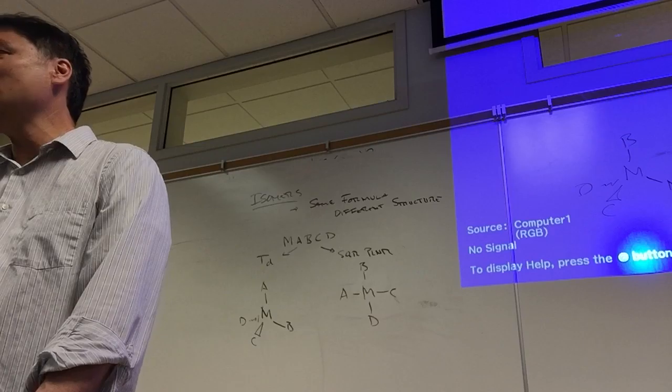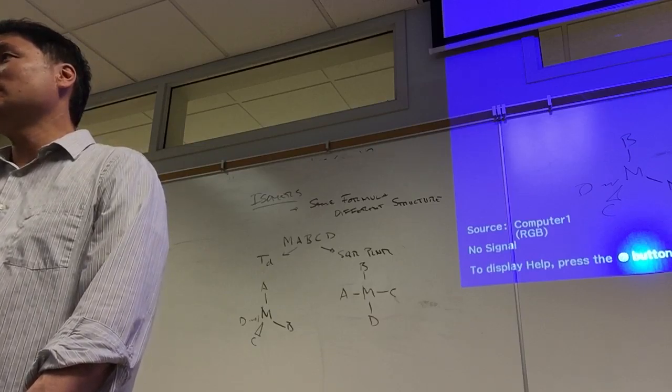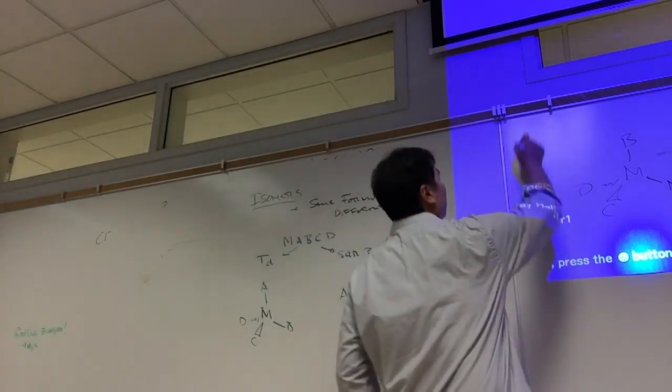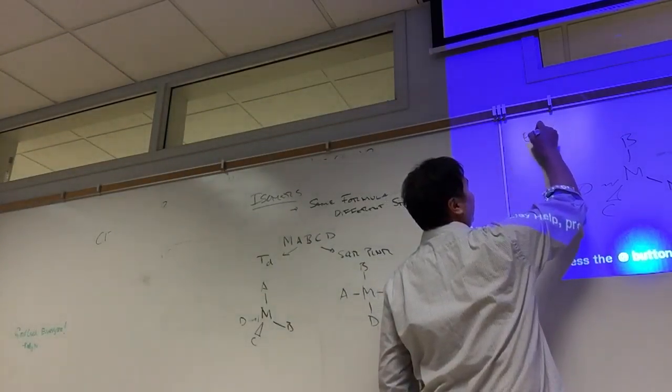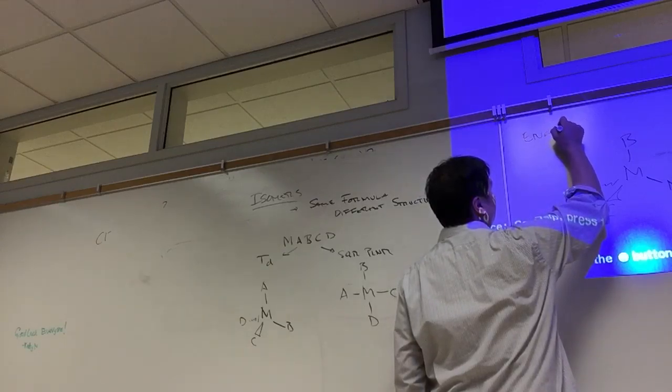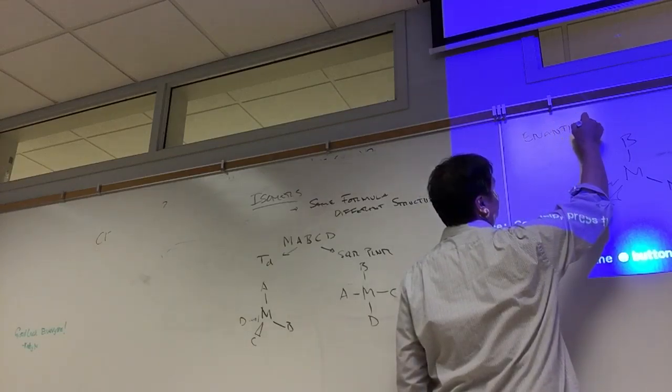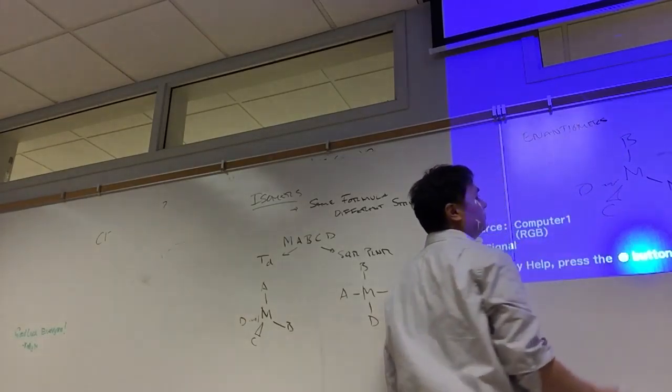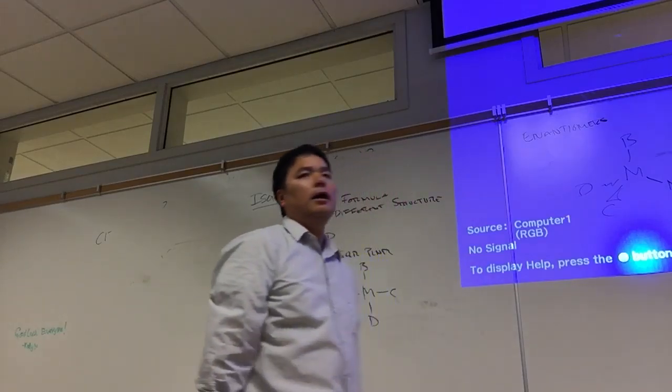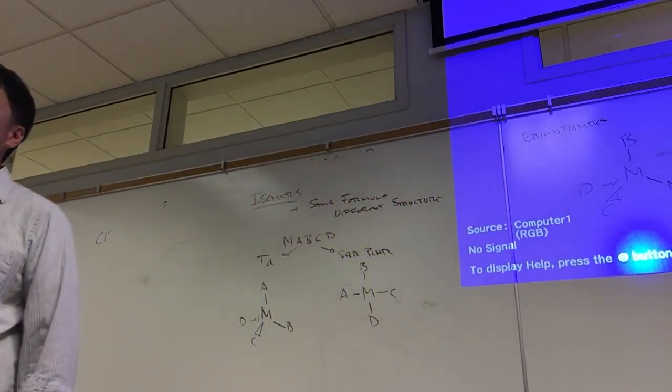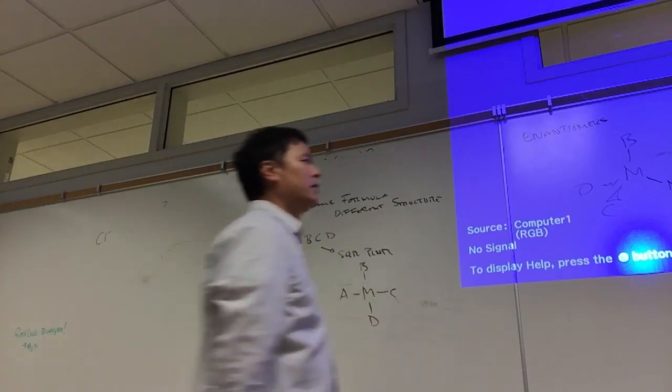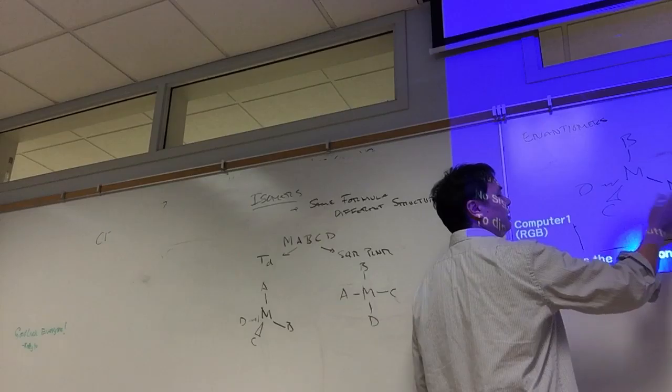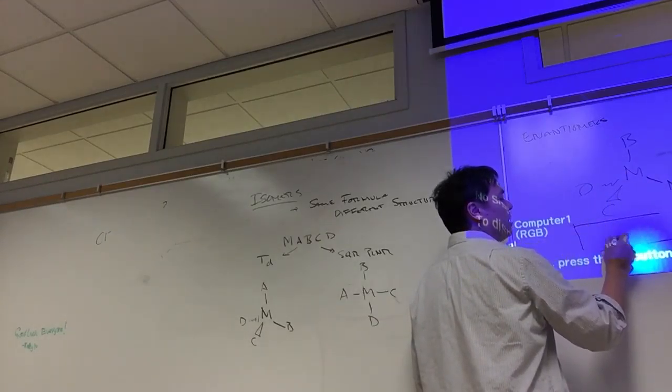So we call these non-superimposable images or enantiomers. Enantiomers occur a lot in biology because enzymes have the lock and key model. So let's say we have an enzyme here and this is our substrate.